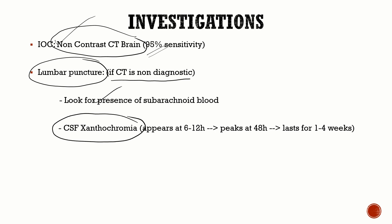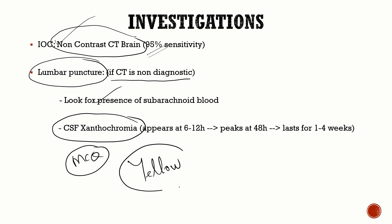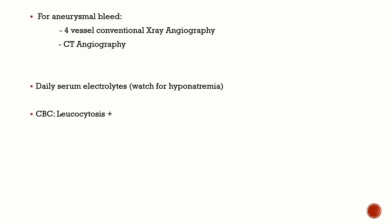CSF xanthochromia is a very important MCQ. The hemoglobin in the subarachnoid space breaks down into bilirubin, giving a yellow stain to the CSF. You must centrifuge the CSF sample before looking for xanthochromia. Xanthochromia appears at 6 to 12 hours, peaks at around two days, and lasts for one to four weeks.